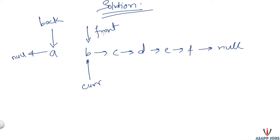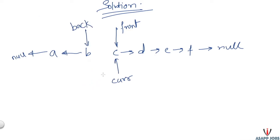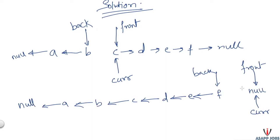In step one, we increment front to the next element C. In step two, we assign current's next to back. In step three, we move back to current's position, then current jumps to the next element C. We keep doing these three steps until current reaches null. At the end, front and current point to null, and back points to the last element. We then set head to point to that last element F, return head, and the linked list is successfully reversed using the iterative method.